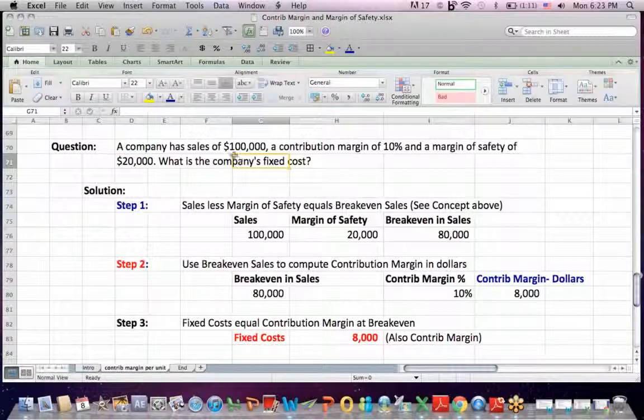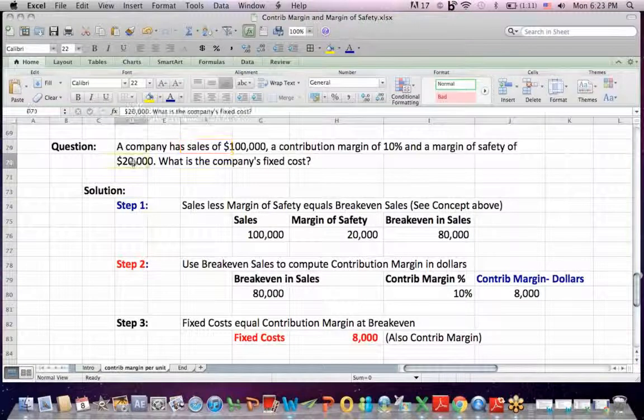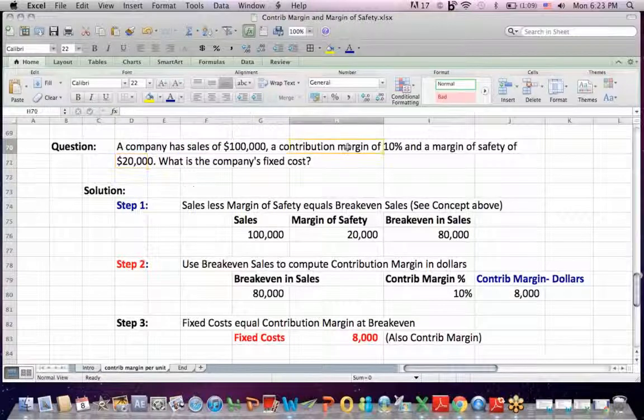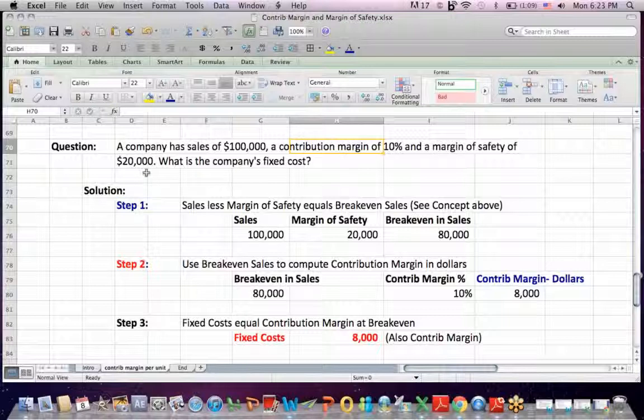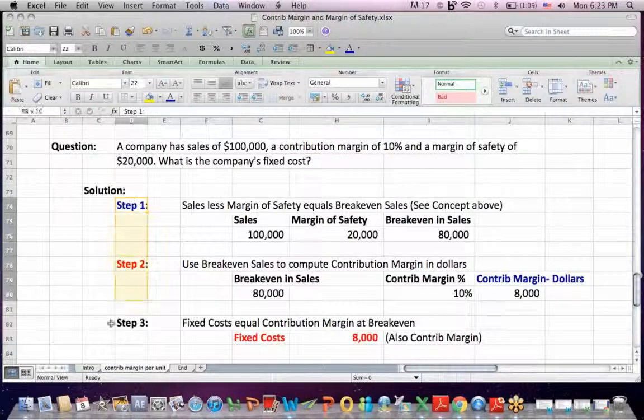Fairly complex question, because they're giving you sales in dollars, margin of safety in dollars. They're giving you contribution margin as a percentage, and that percentage is as of sales, which was not sufficiently explained in the question for the student. Well, let's take our steps.